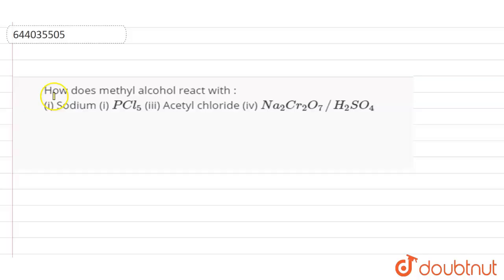Hello students. The question being asked here is how does methyl alcohol react — first with sodium, then with PCl₅, then with acetyl chloride, and the fourth one is sodium dichromate in the presence of H₂SO₄. Let's see them one by one.